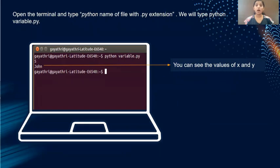This will be the output of the code. X is 5 and y is john. So I gave print x and y. This is the output of our code.